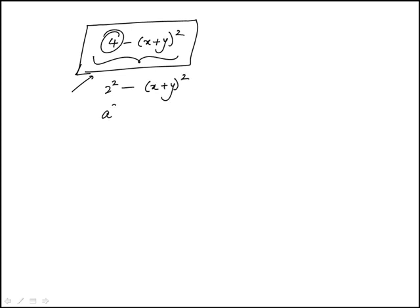At this stage, this is the form of the difference of squares identity, a squared minus b squared. It can be factored as the product of (a + b) and (a - b).